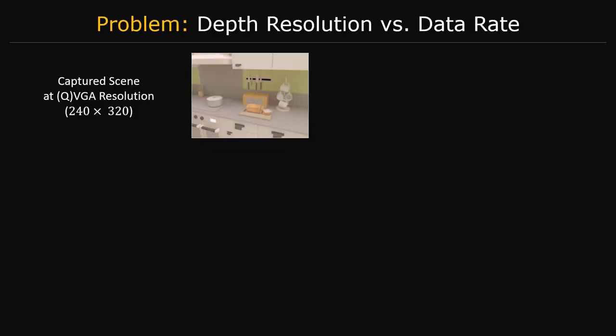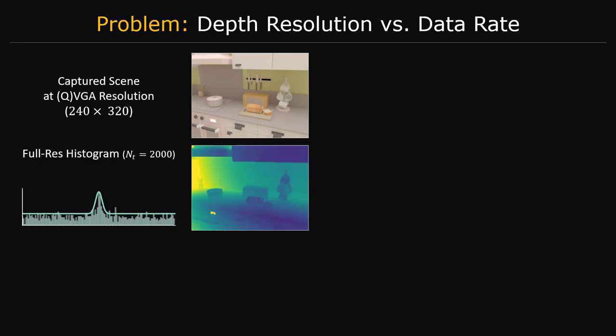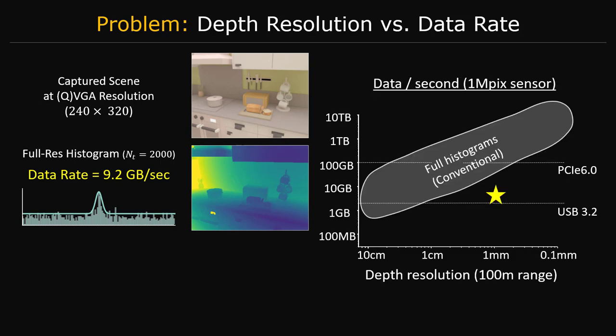Consider capturing the following scene with a SPAD-based 3D camera. This camera can capture the 3D structure of the scene quite well if we store a histogram with a high temporal resolution of around 50 picoseconds. The data rate of this modest resolution sensor would be 9.2 gigabytes per second, which is already above the rate that a USB 3.2 could handle.